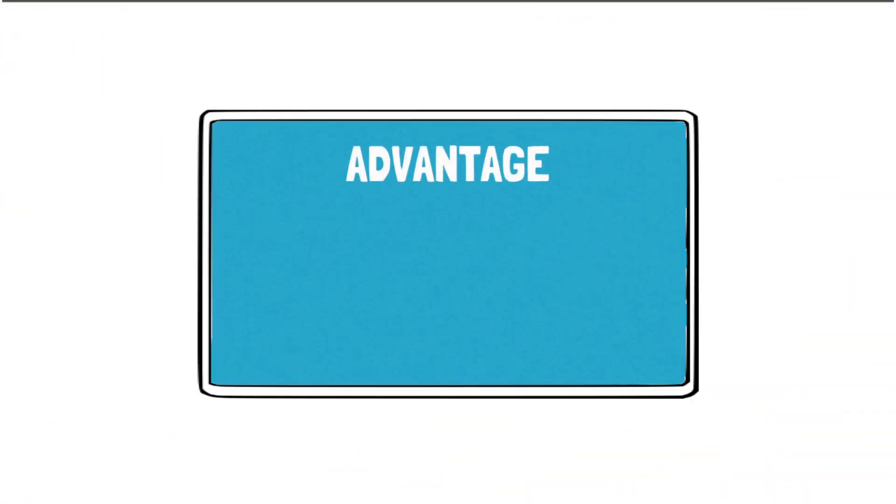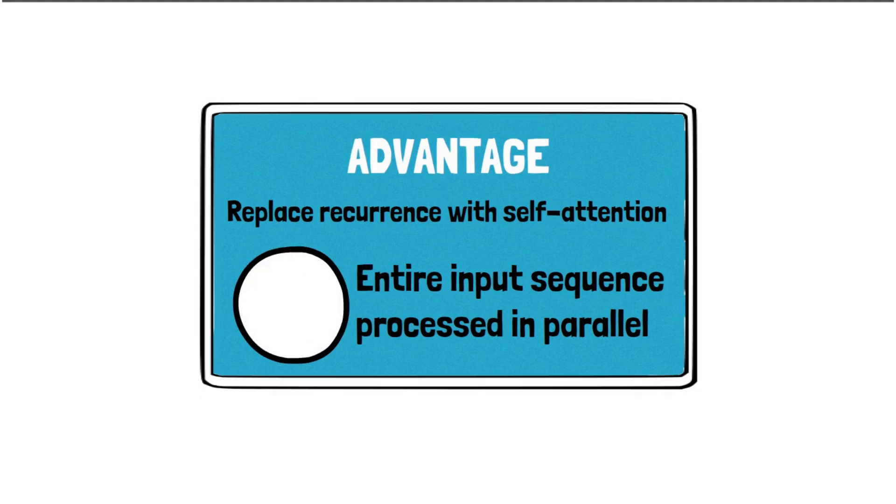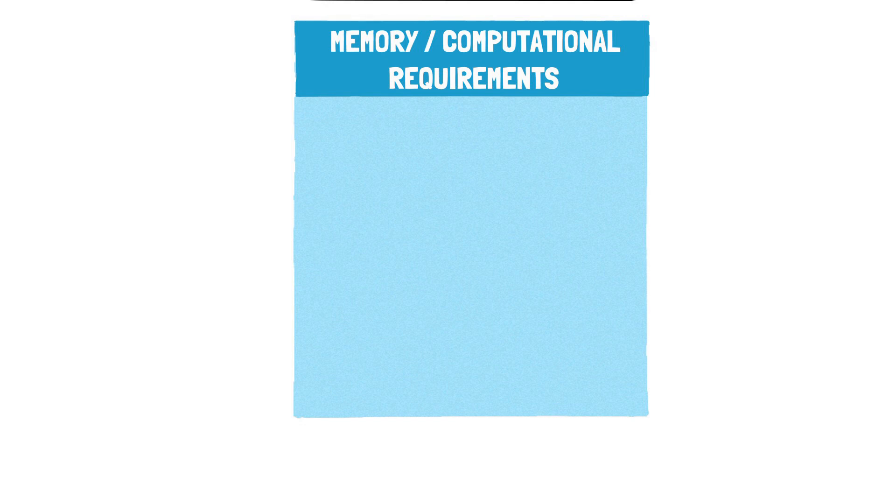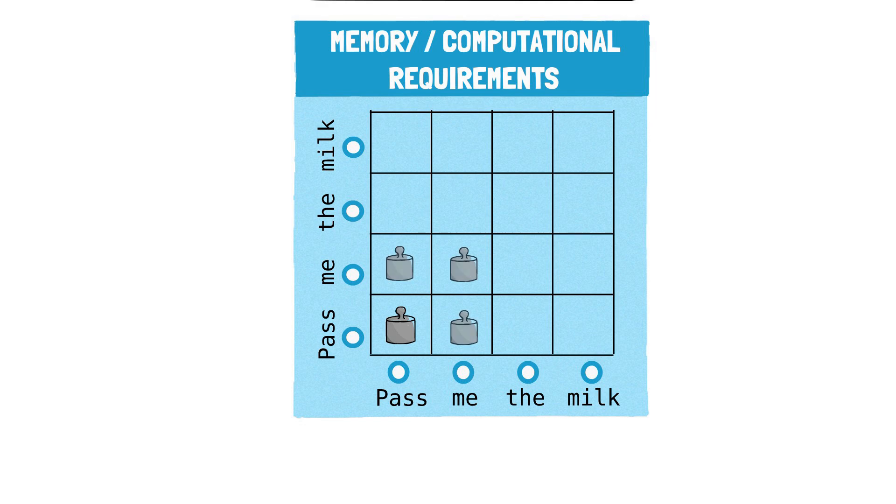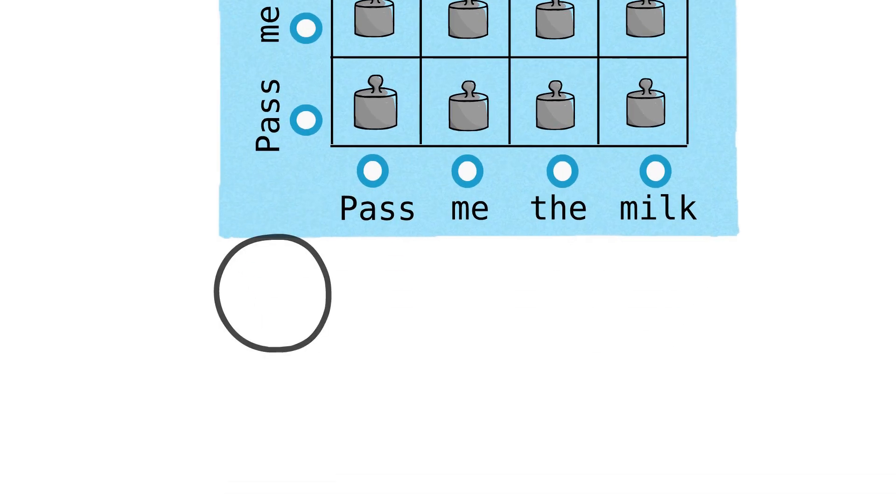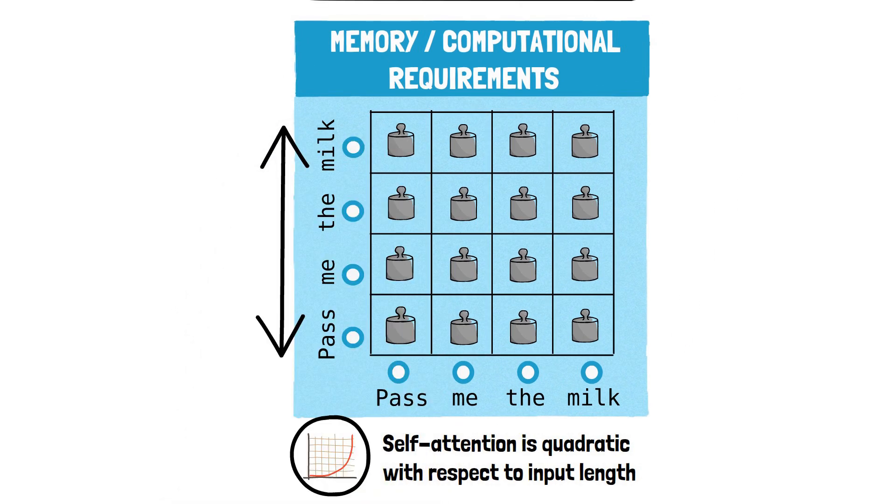The key advantage of replacing recurrence with self-attention is that the entire input sequence can be processed in parallel, computing all the hidden representations at once, rather than one word or token at a time. The memory and computational requirements, however, do increase with the length of the input sentence, but not in a linear way. Self-attention requires computing attention weights for each pair of words in the sequence. This means that the computational complexity in time and space of the attention mechanism is quadratic with respect to the sequence length. For this reason, transformers are designed and trained with a maximum input size or context size to keep the memory and computing requirements in check.